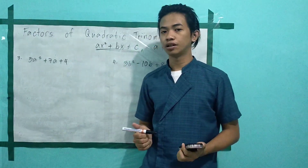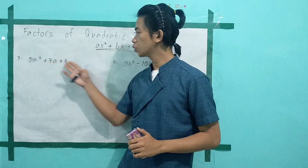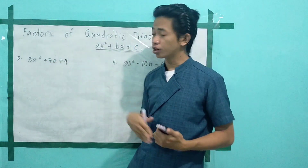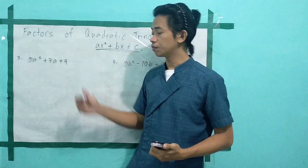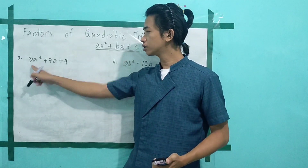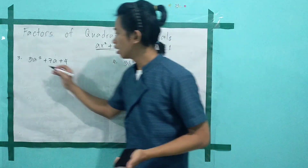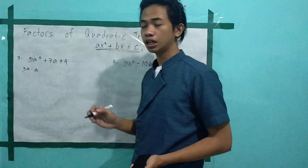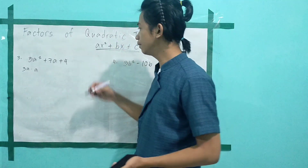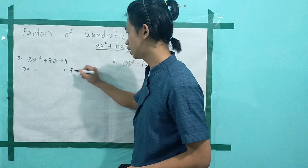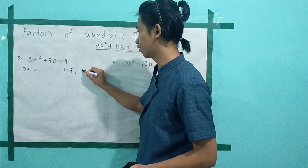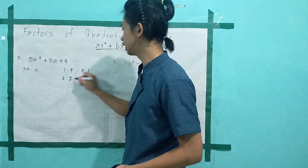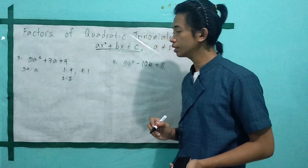Problem number 3: we have 3a squared plus 7a plus 4. Since there is no common monomial factor, we proceed to step 2. The factors of a are 3a multiplied by a. For c, the factors are 1 times 4, or 4 times 1, or 2 times 2.